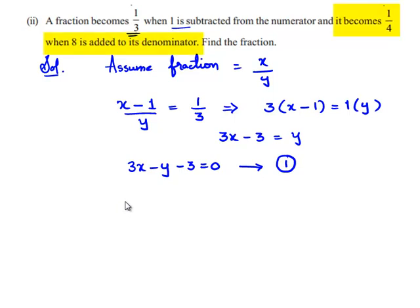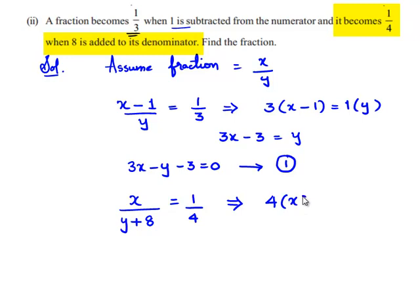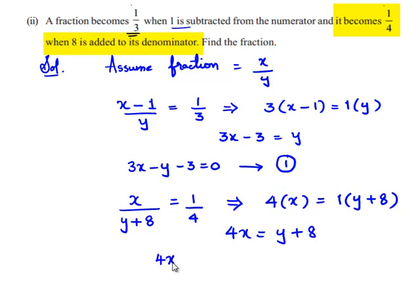Applying the second condition: when 8 is added to the denominator, the fraction becomes 1/4. So x divided by (y + 8) equals 1/4. On cross multiplication, we get 4x = y + 8, which gives 4x − y − 8 = 0. This is Equation 2.